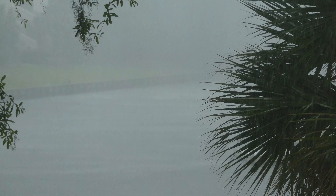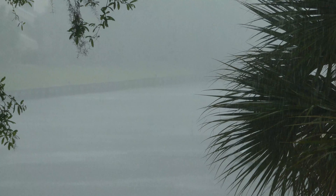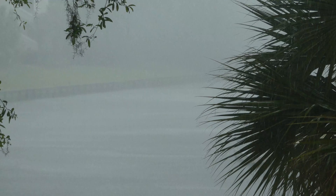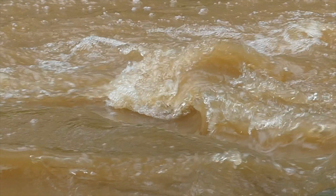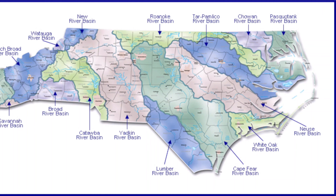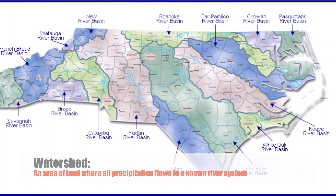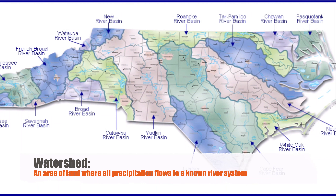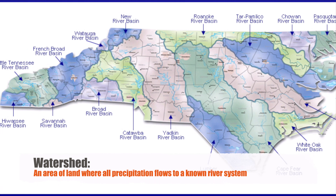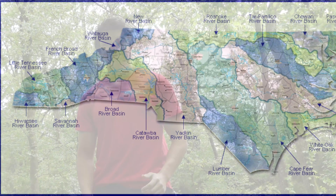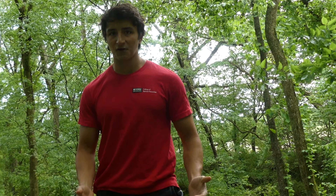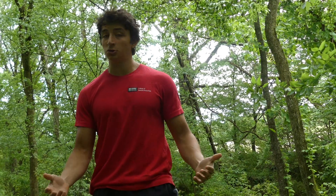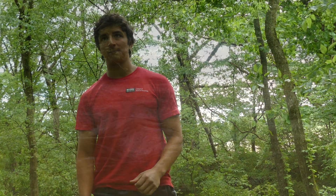Every drop of water that falls from the sky as precipitation will eventually make its way to a river. By tracking where the water in a certain area ends up, we can map out an area called a watershed. All the water in this location will find its way to a specific river, and eventually the ocean. Understanding watersheds is very important, because if we don't know where the water in a river is coming from, we have no idea where pollutants or new species could be coming from.